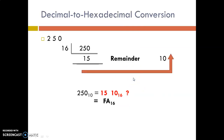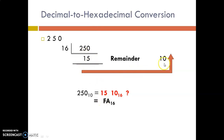Next, we will see how to convert decimal to hexadecimal equivalent. For the integer part, we follow successive division method. Since the radix of hexadecimal is 16, we repeatedly divide the decimal number by 16. So 250 divided by 16: the quotient is 15 and remainder is 10. We cannot proceed further, so we move in the reverse direction. The hexadecimal equivalent of 15 is F and the hexadecimal equivalent of 10 is A, so we write FA. This is how you convert a decimal number to hexadecimal equivalent.